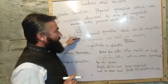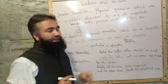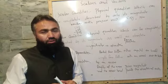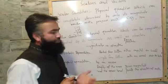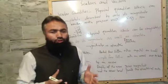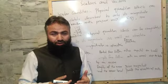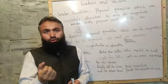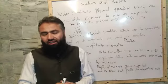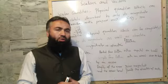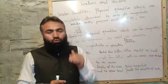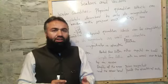On the other hand, those quantities which can be completely described by magnitude as well as direction are called vector quantities. For example, force is a vector quantity. Force has a value and a direction — when you push or pull something, the strength is the magnitude, and the direction in which you push or pull is the direction. So force is a vector quantity. Velocity and acceleration are also vector quantities. Vector quantities need both magnitude and direction.